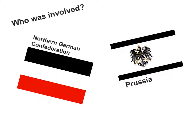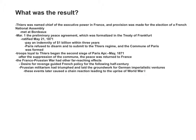The two main countries that were involved were the German Federation and Prussia. What were the results? Thiers was named Chief of the Executive Power in France, and provision was made for the election of a French National Assembly.